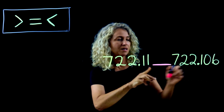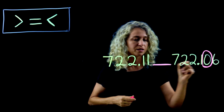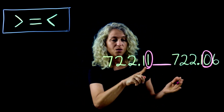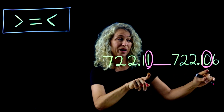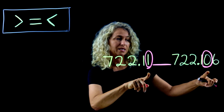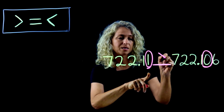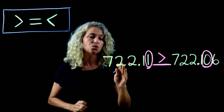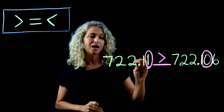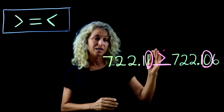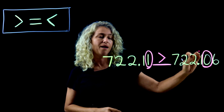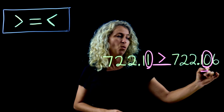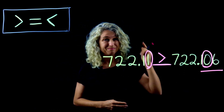Move on to the hundredths place — it's not the same. So here's where we stop and compare: one in the hundredths place is greater than zero in the hundredths place. Our comparison symbol goes this way, so that seven hundred twenty-two and eleven hundredths is greater than seven hundred twenty-two and one hundred six thousandths. Don't be confused — one hundred six thousandths may sound larger, but it's not.